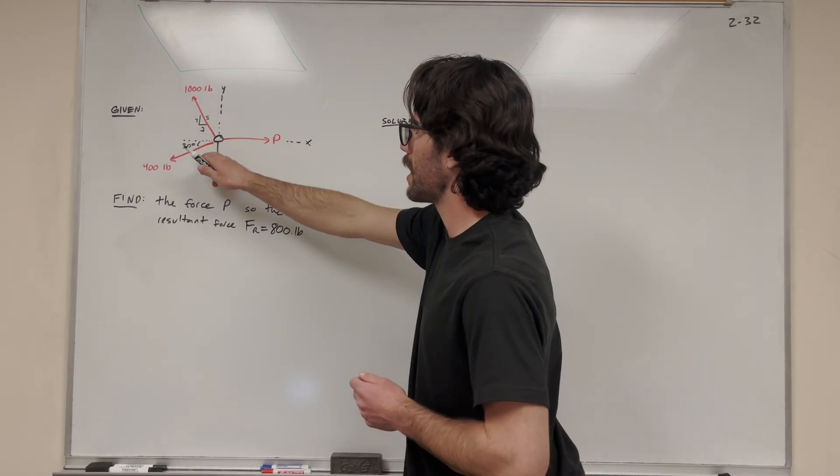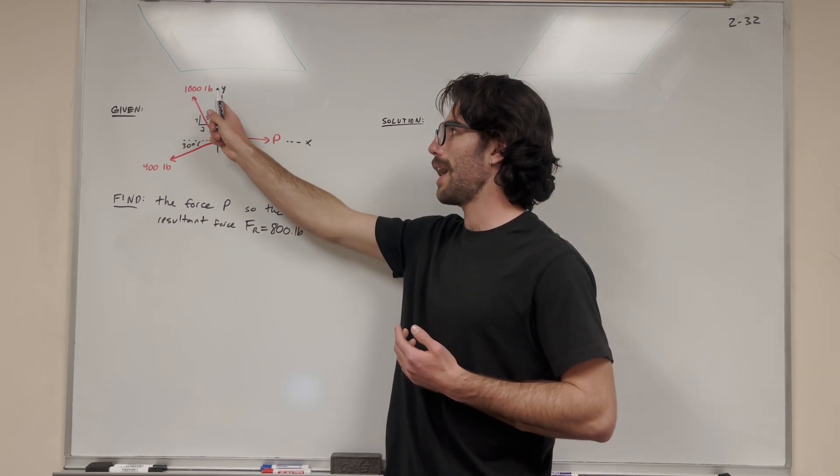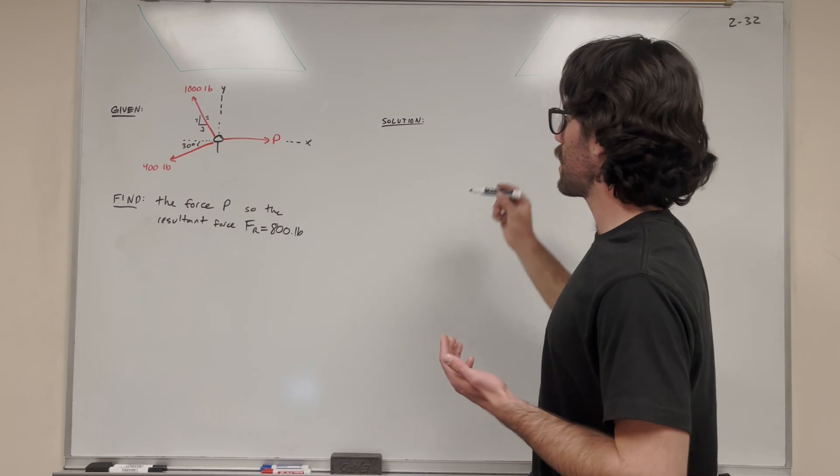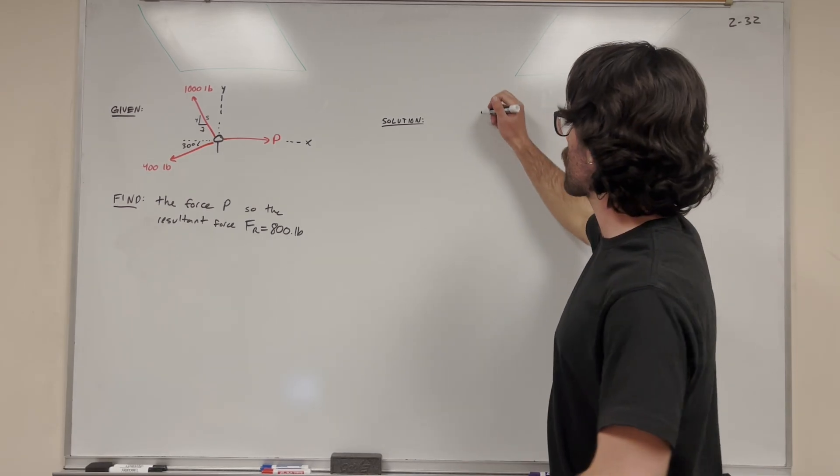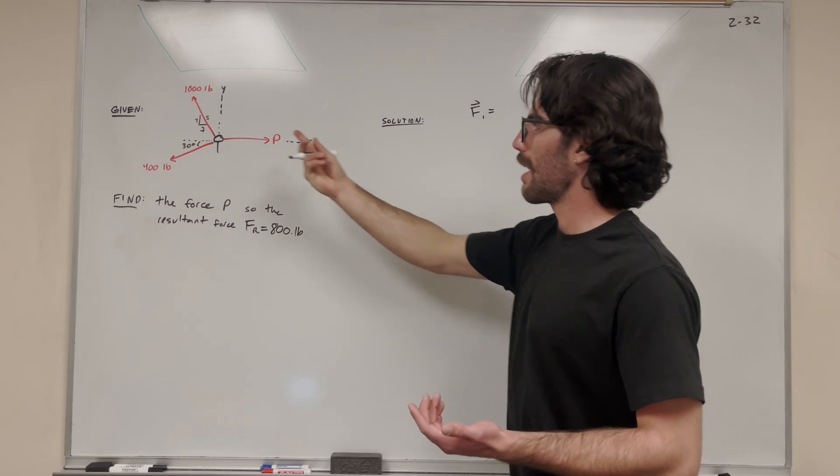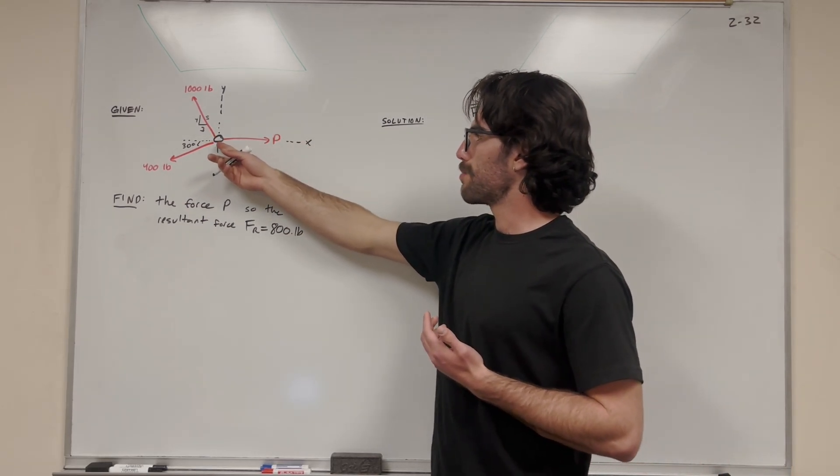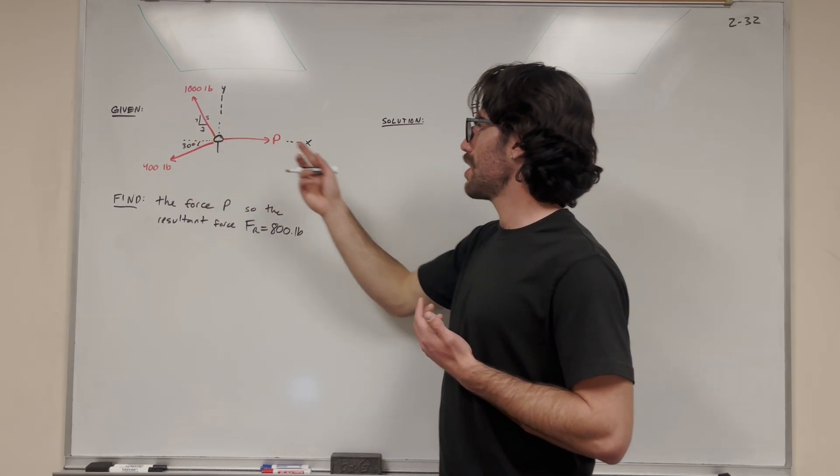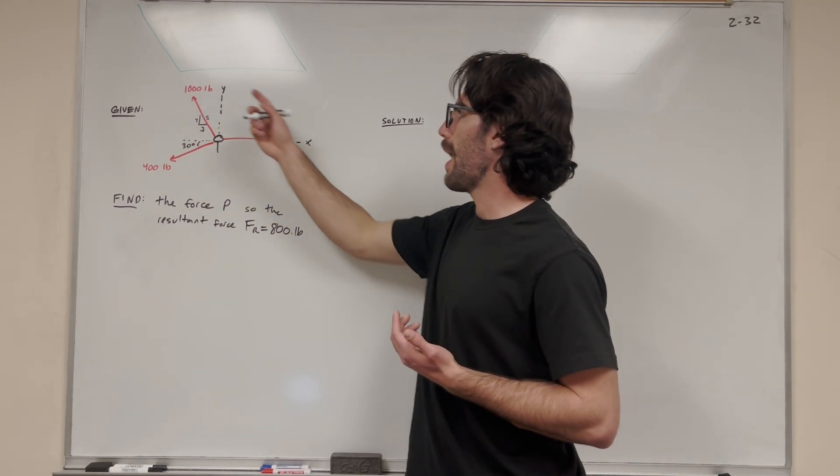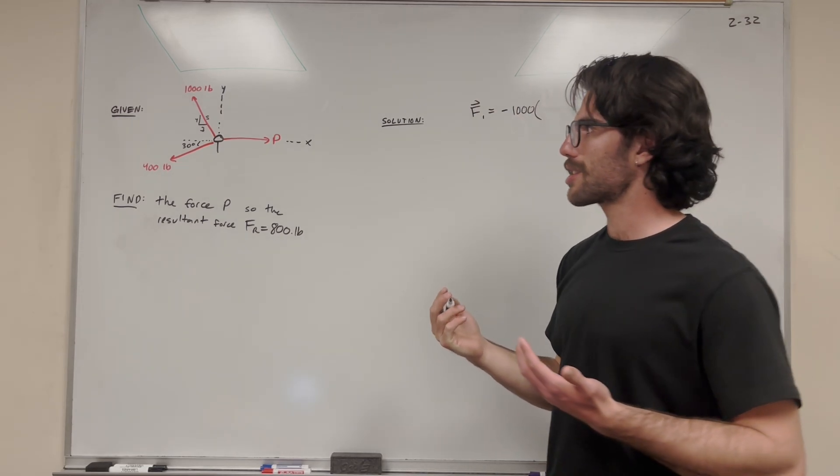Let's start by turning these into three different vectors. We have 1,000 pounds acting in this 3-4-5 triangle in quadrant 2. Let's label this force 1. We want to convert it into its x and y components. Its x component is pushing in the negative direction, so we attach a negative to its x component. Then we take the magnitude, negative 1,000, but not all 1,000 is acting in the x direction.